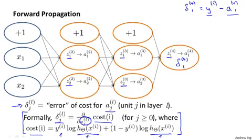Next, we're going to propagate these values backwards. I'll explain this in a second. And end up computing the delta terms of the previous layer. We're going to end up with delta 3, 1, delta 3, 2. And then we're going to propagate this further backwards and end up computing delta 2, 1 and delta 2, 2.